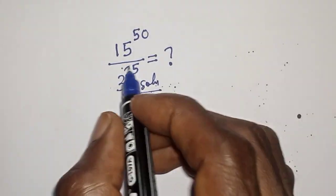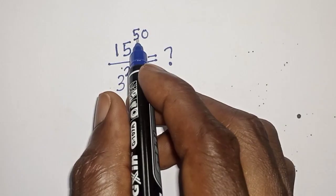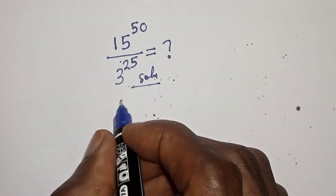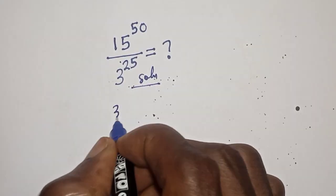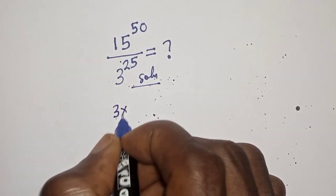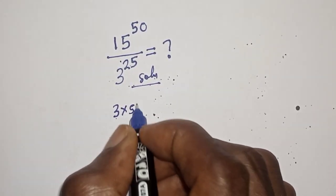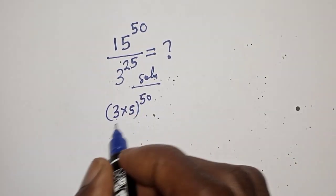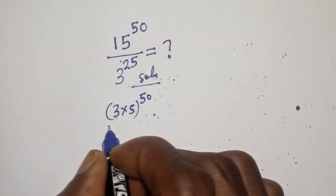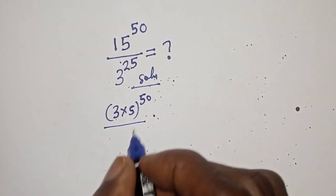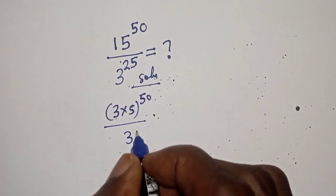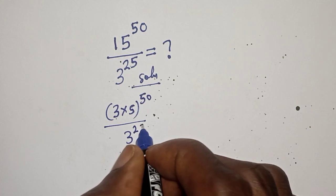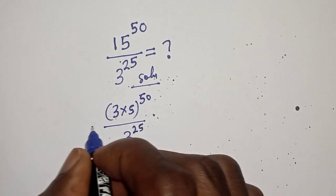15 raised to power 50 can be written as 3 times 5, raised to power 50, over 3 raised to power 25.